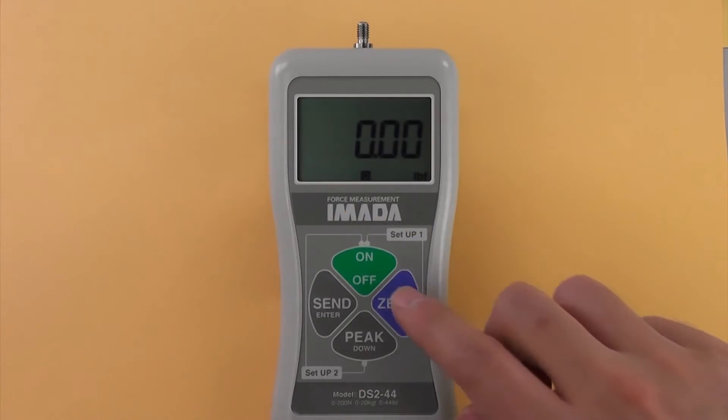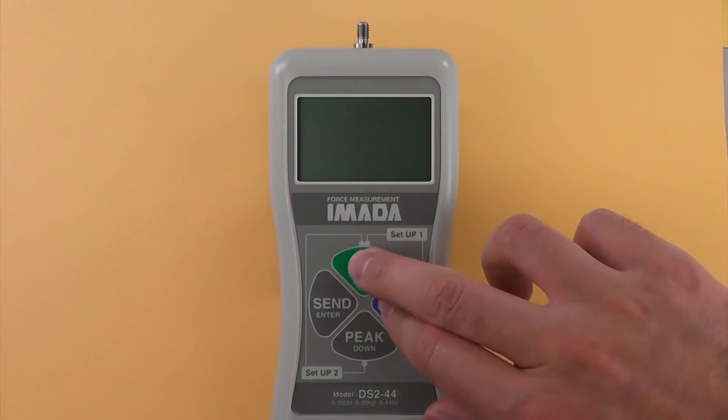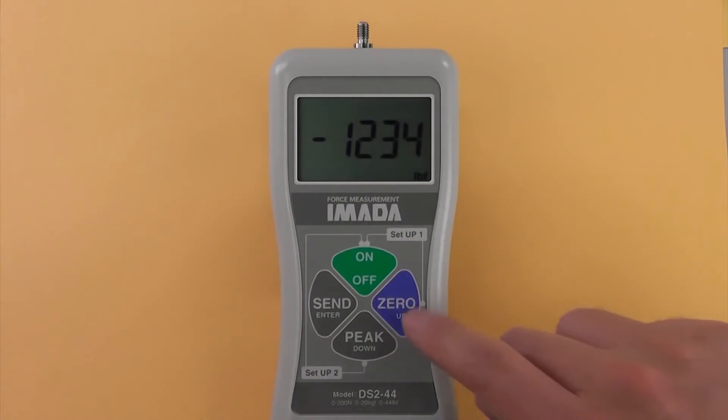Selecting units. Turn off the gauge. Hold 0 and press ON once. Press PEAK to cycle between standard and reverse display. Press SEND to select.